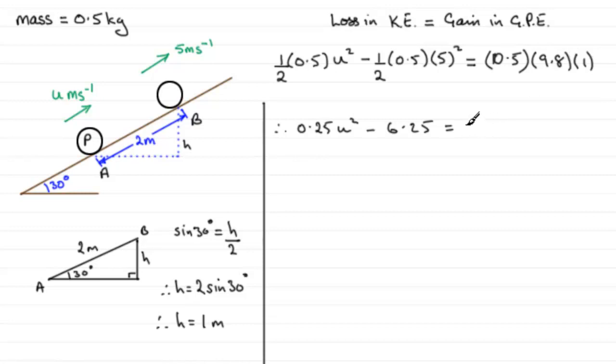Then you've got ½ times 9.8 times 1, so that's 4.9. Add 6.25 to both sides and you've got 0.25u² equals 4.9 plus 6.25, which comes out to 11.15. Divide both sides by 0.25 and you end up with u² equals 44.6.